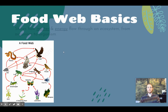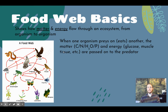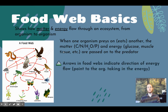We use food webs to show how the flow of matter and energy happens in an ecosystem, specifically from organism to organism. When one organism eats or preys on another — and even an herbivore eating a plant is considered predation because it's one organism using another for its energy source — the matter and energy flow from prey to predator. So even when an herbivore is eating a plant, we consider that predation.